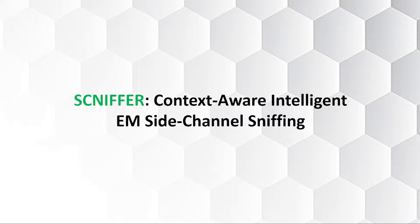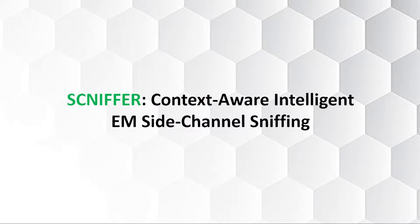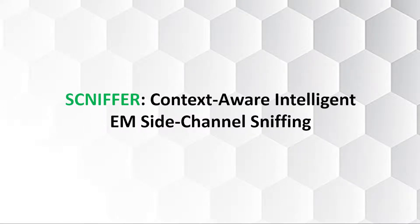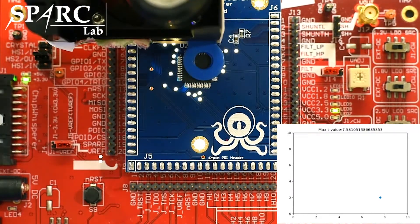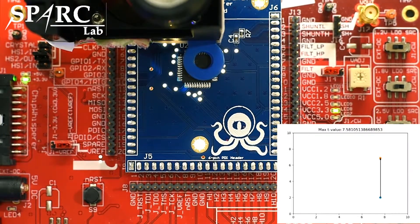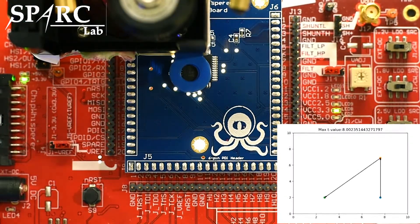This demo presents Sniffer, an automated system for performing electromagnetic side-channel attacks. By automatically determining the location on a target device that leaks the most sensitive information, Sniffer reduces the number of traces needed to break a cryptographic system.